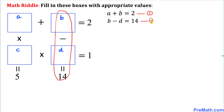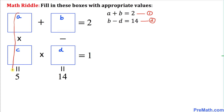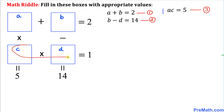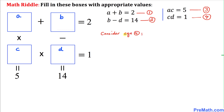Now let's focus on boxes A and C — we are multiplying them — so A times C equals 5. I'll call this Equation 3. Finally, C times D, also multiplied, equals 1. I'll call this Equation 4. Now let's get started with finding the values of A, B, C, and D.